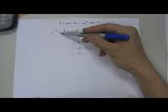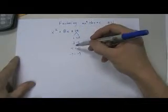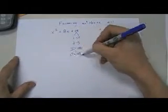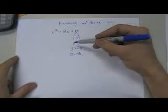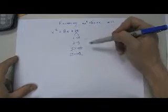So because the middle term is positive, I can ignore all negative factors. That leaves me with 1 and 15 and 3 and 5. And I know that 3 plus 5 equals 8.